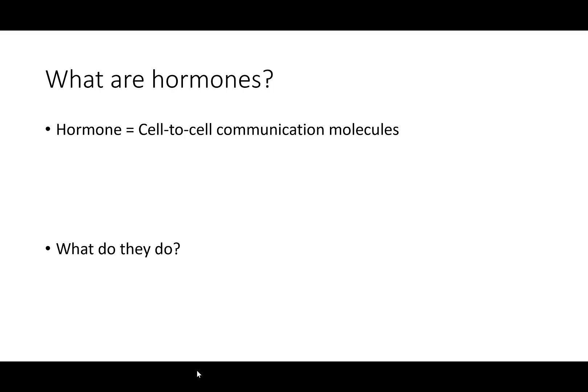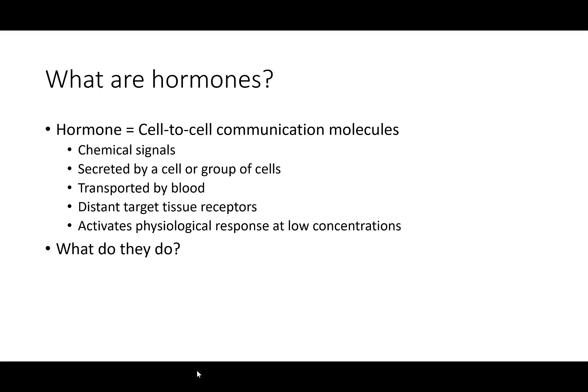Let's start first with what are hormones. A hormone is a molecule utilized for cell-to-cell communication. By definition, hormones are chemical signals. They get secreted by either a single cell or a group of cells and they are transported by blood — that distinguishes a hormone from a neurotransmitter, which does not get transported by the blood. Because there is systemic circulation, the effect they have is on target tissues that are generally very distant from the cells that secrete it.